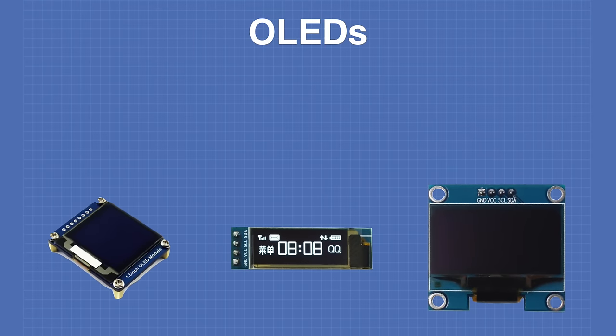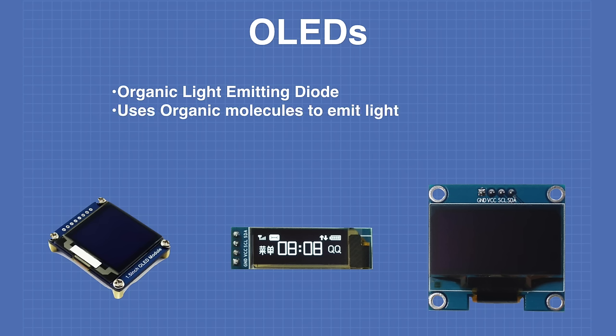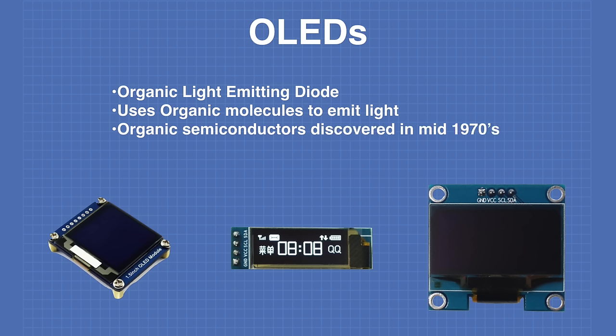OLEDs are organic light emitting diodes. Organic molecules are molecules that contain carbon, and OLEDs use organic molecules to emit light. Organic semiconductors were first discovered in the mid-1970s and led to a Nobel Prize in the year 2000.